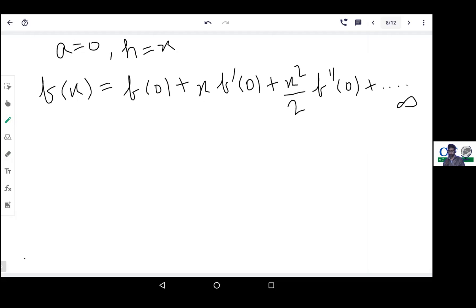Same concept - a is replaced with 0, h is replaced with x. Then it will be known as Maclaurin's series. Very important expansions - both are very important.